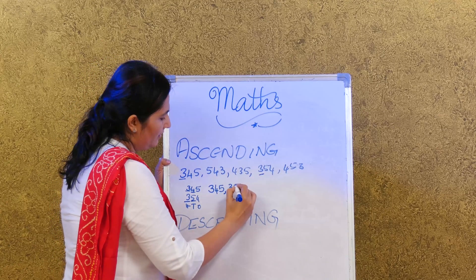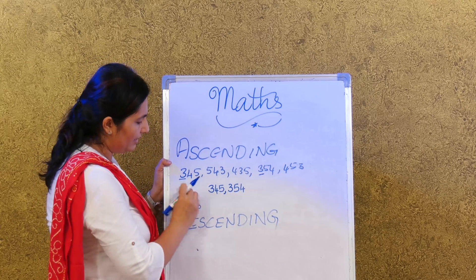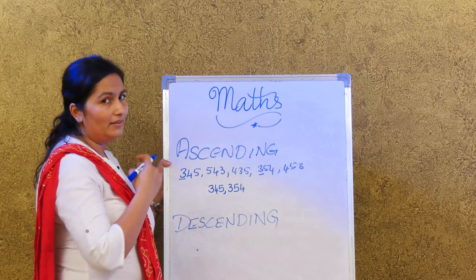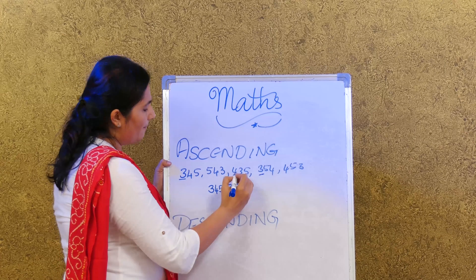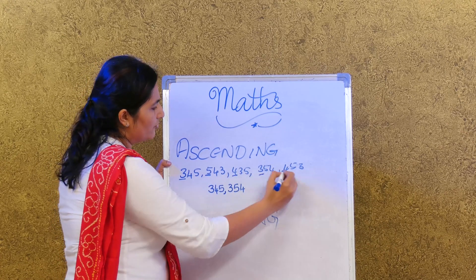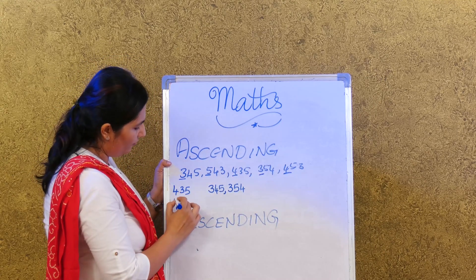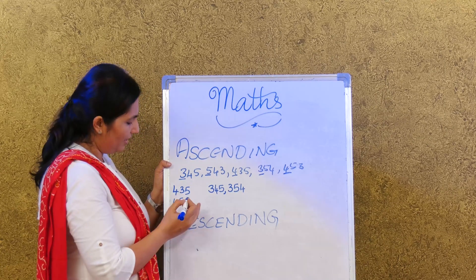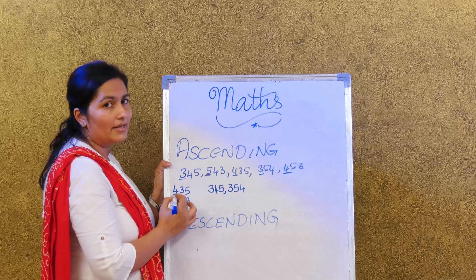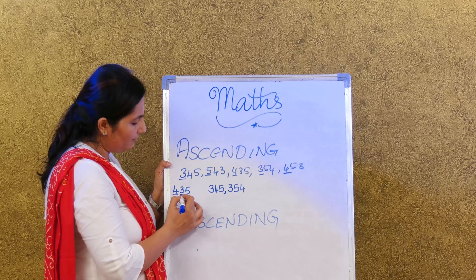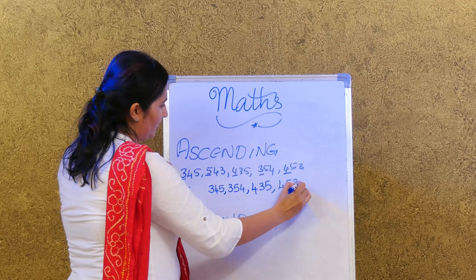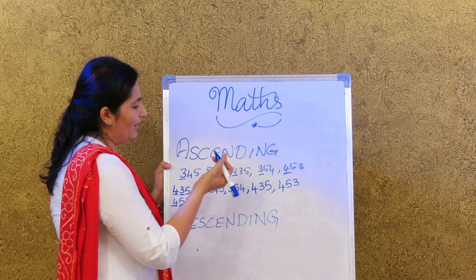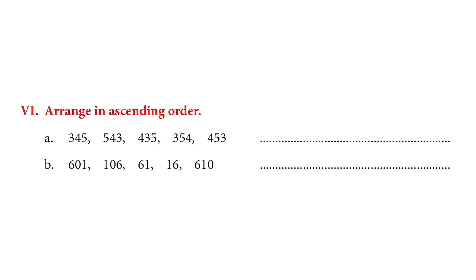We found 345 as the smallest, then 354. Next, looking at the 400s: we have 435 and 453. The hundreds are the same, so we look at tens — 3 is less than 5, giving us 435 next, then 453. Finally, 543 is the largest. So the ascending order is: 345, 354, 435, 453, 543.